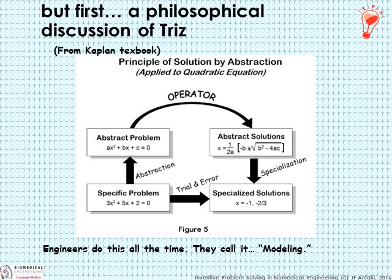First, I'd like to share this philosophical discussion of TRIZ put forth by Kaplan. He uses an example of a quadratic equation. You could technically solve that equation by guessing the value of x, plugging it into your calculator, and trying it over and over until the result is nearly zero. Or, you can recognize that that's a specific version of the general problem ax² + bx + c, for which we have an already-solved — albeit abstract — solution. If you can make that leap, you can apply the specifics of this particular problem into the abstract solution and get your specific answer.